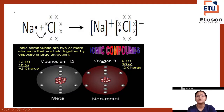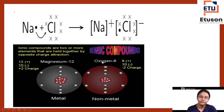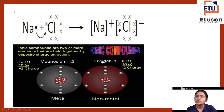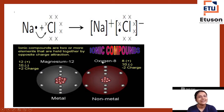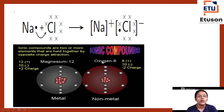Now for magnesium oxide. Magnesium has atomic number 12 and oxygen has atomic number 8. Magnesium is a metal and oxygen is a non-metal. The electronic configuration of magnesium is 2, 8, 2 — its last shell has 2 electrons, so it has Mg²⁺ charge. Oxygen has atomic number 8, so its configuration is 2, 6.